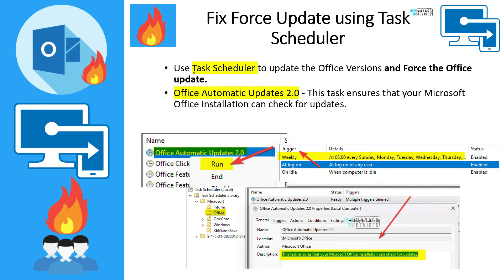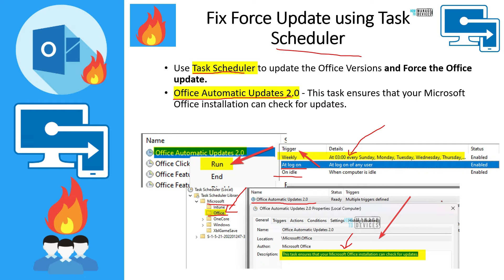In this slide we are going to talk about a Task Scheduler option that will help you force Office automatic updates. If you go to Task Scheduler, expand Microsoft, and go to Office, you will see a task called Office Automatic Update 2.0. This task ensures that your Microsoft Office installation can check for updates. If you right-click on this task and click Run, it will immediately run without waiting for the weekly schedule or other triggers — this is one way to force an automatic update of Office applications.